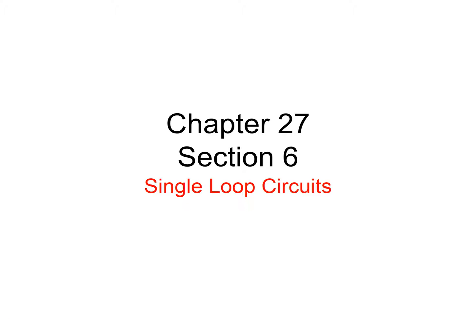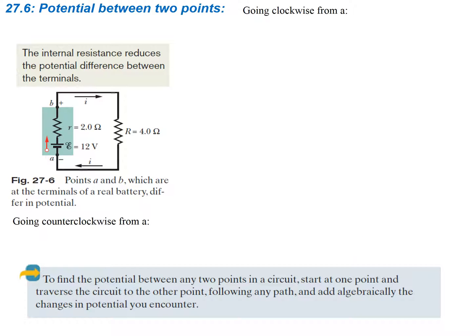We're going to continue with Chapter 27 covering Section 6, which talks about finding the potential for a single loop circuit. The potential between two points in a single loop circuit: one thing we need to realize is that the internal resistance of our EMF device, whether it's a battery or not, reduces the potential difference between these two terminals. So here's our two terminals, A and B — one's going to be positive, one's going to be negative. We want to see what the effect of this internal resistance is.